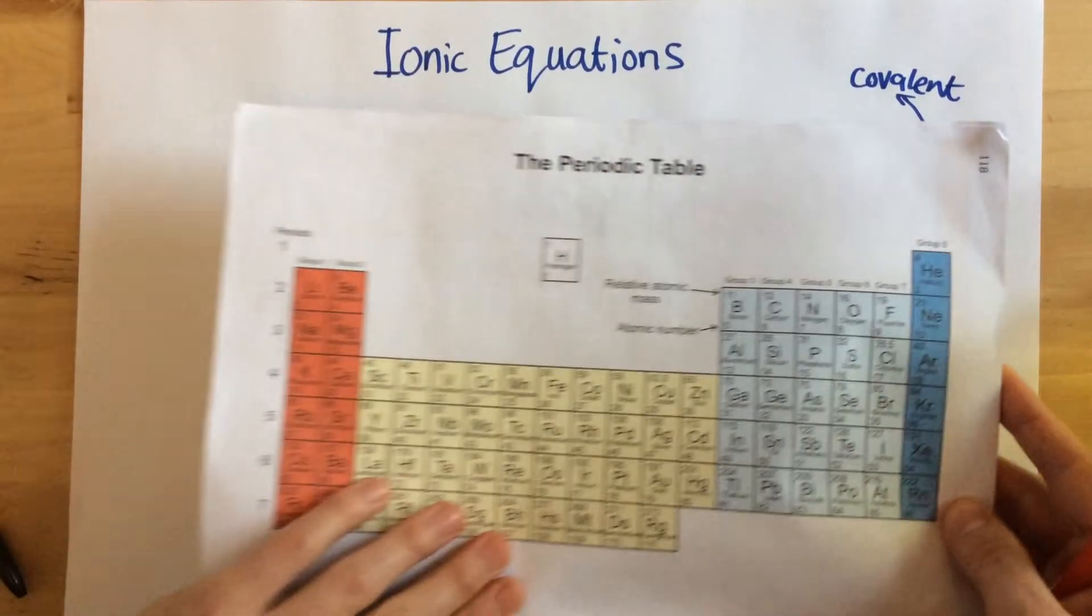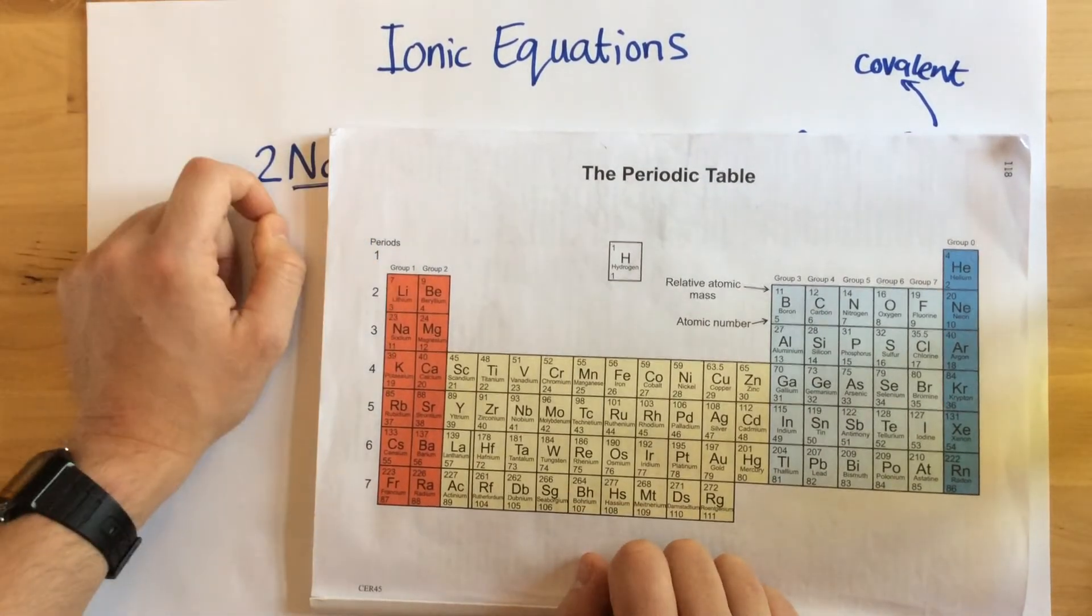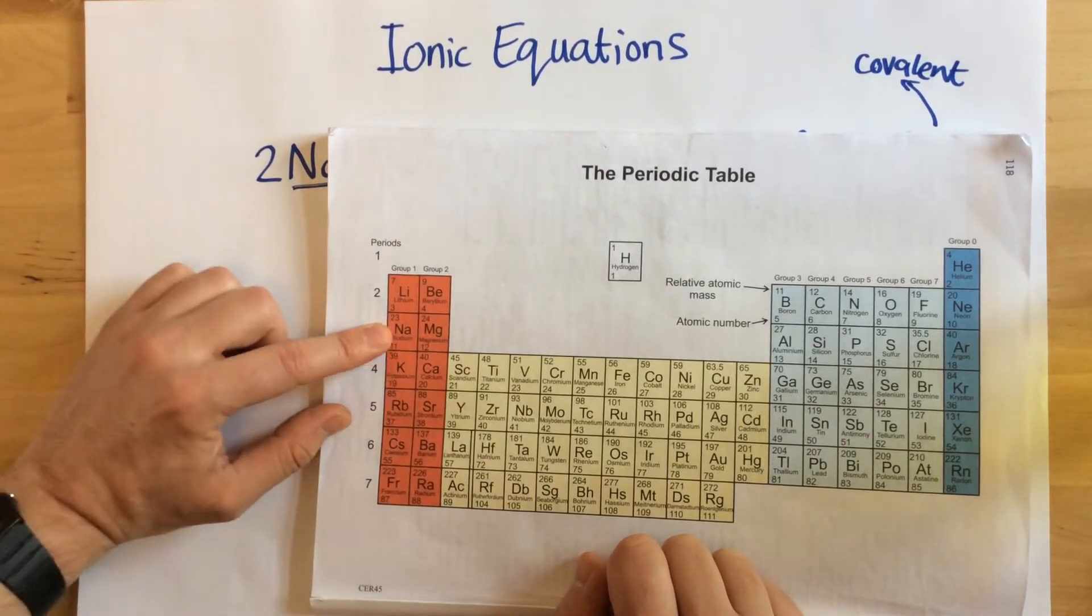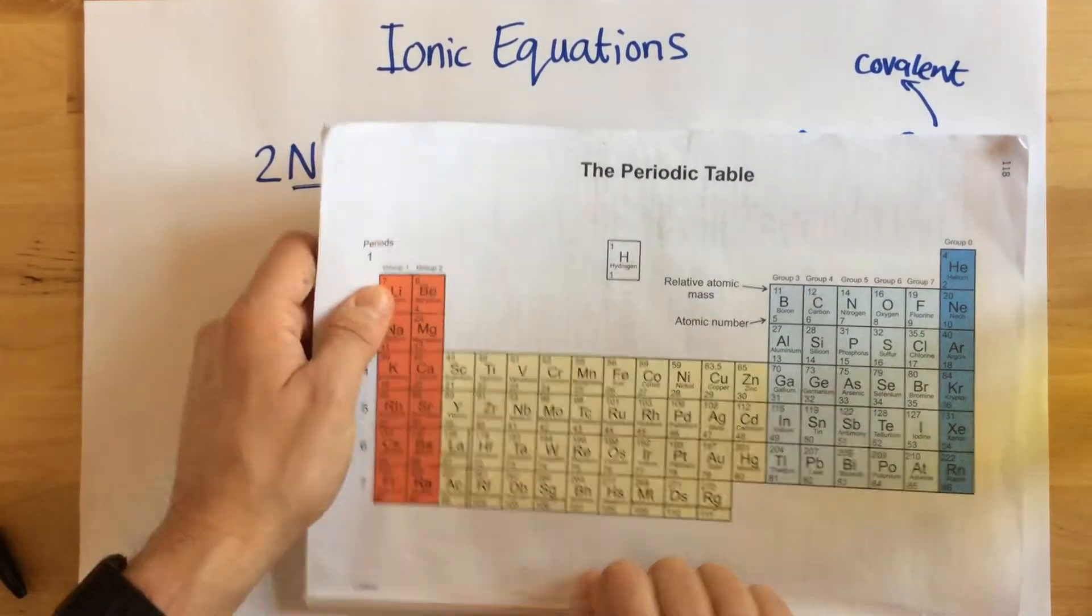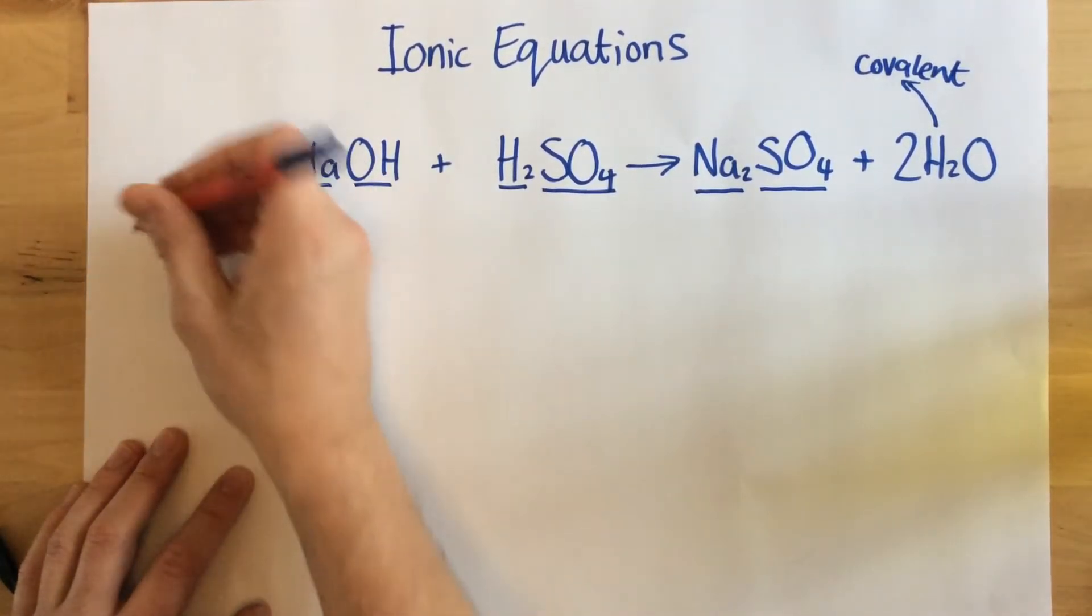So sodium, let's think, use our periodic table. Sodium is in group one of the periodic table. That means it has one electron in its outer shell. So to form an ion, it needs to lose one electron. Therefore, sodium has a positive charge, a one plus charge.